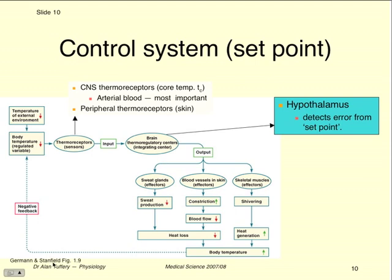If you're using the new edition of Gorman and Stanfield — now called Stanfield and Gorman — this material is in chapter one. The other error in the slides is a figure number that says 27 instead of 17, which is not consequential.